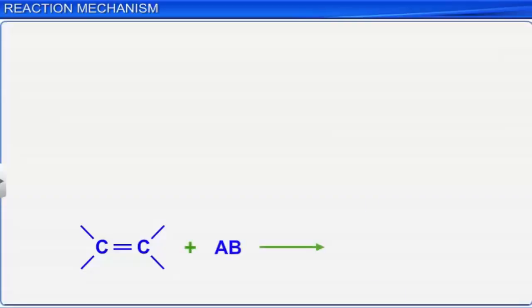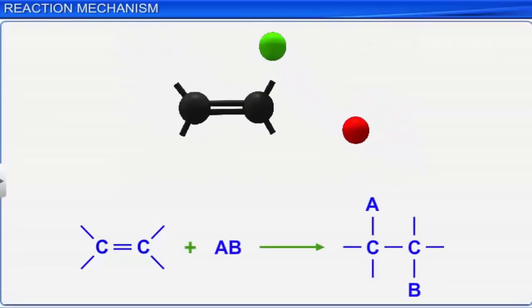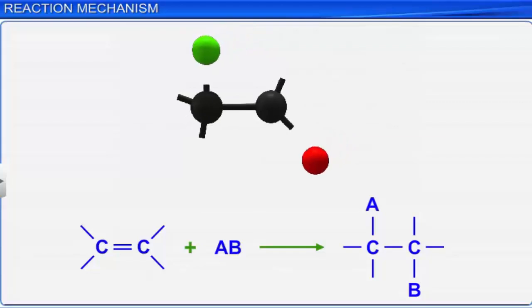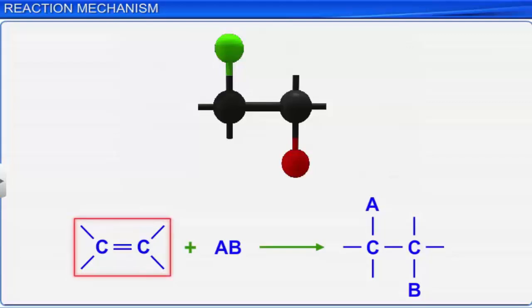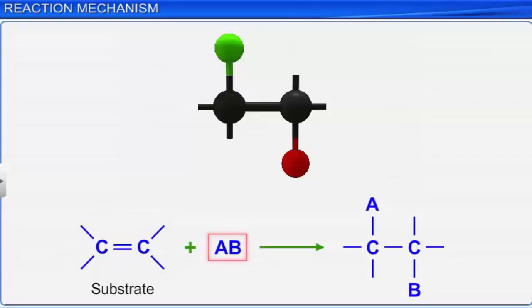In an organic reaction, when reactants react to form a new compound, the reactant that supplies the carbon atom for the formation of a new bond, or the reactant on which the focus is, is called the substrate, whereas the other reactant in the reaction is called the reagent.